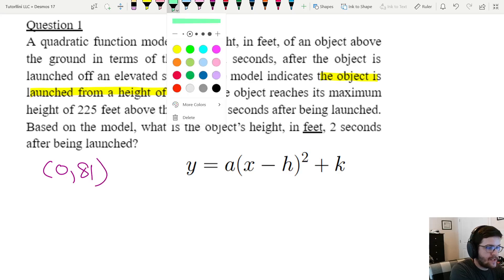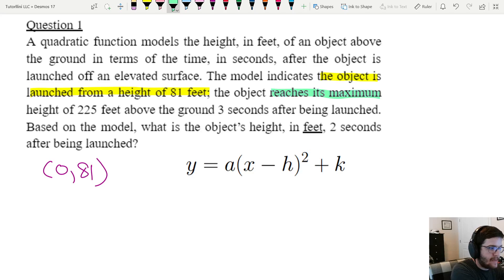And then it also tells us it reaches its maximum height of 225 feet above the ground three seconds after being launched. So time is x, height is y, so this is the point 3 comma 225. And because it says the word maximum, that tells us that this point is the vertex. So we can label this h comma k.